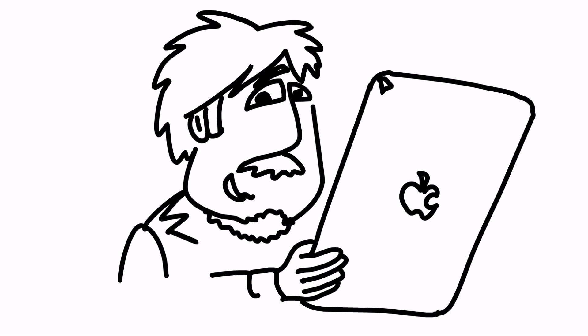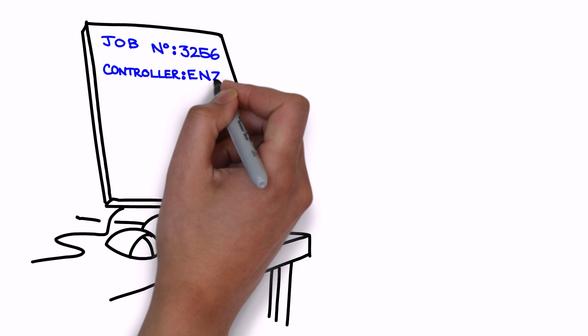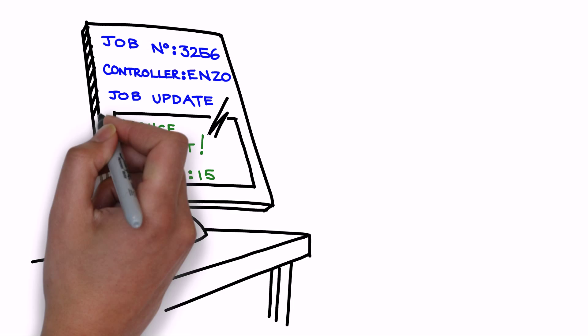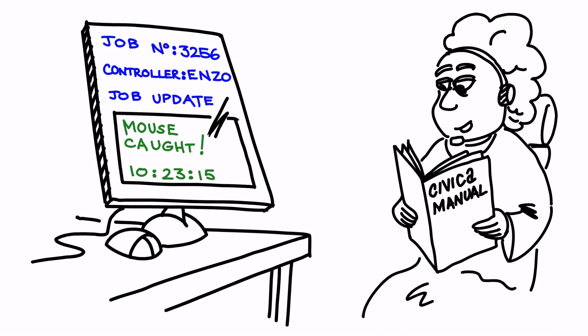Enzo attends the premises and rounds up all of the mice. He then updates and submits the job details, and they are immediately sent into the APP back-office. From here, the admin team is automatically notified that they need to raise an invoice to the customer.